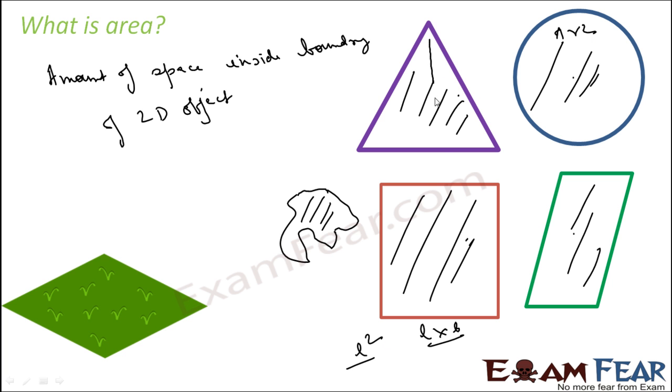For triangle, if we know the height of the triangle, we know the base of the triangle, then it is 1/2 into b into h. So we know area of some popular figures.